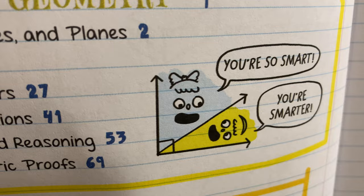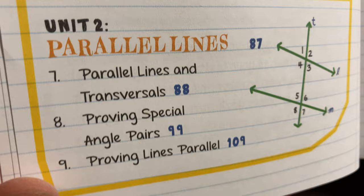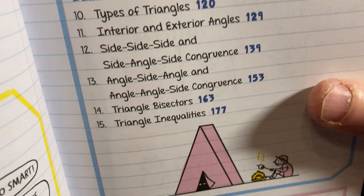Unit 2, parallel lines. Unit 3, triangles and congruence. Some pictures there. Really cool. Really cool artwork.